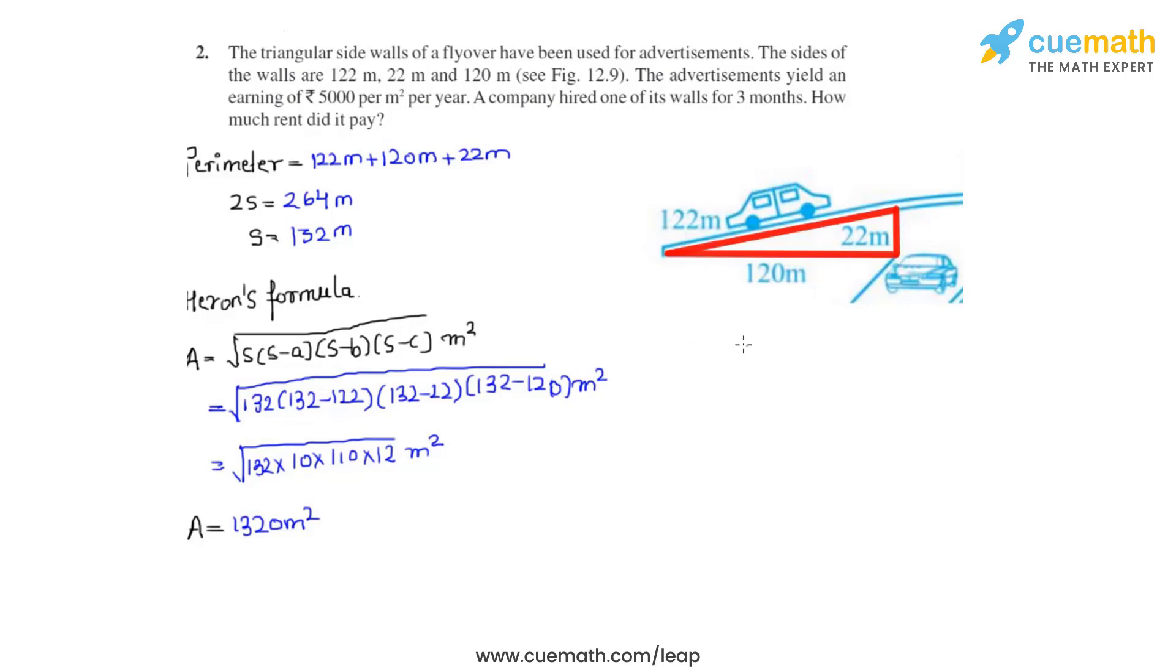The next part of this question is about the rent. They have given us in the question that the rent for one meter square per year is equal to Rs 5000. But we need to calculate what is the rent per meter square per month, as the company had hired the wall for 3 months. So that can be calculated by dividing these 5000 by 12.